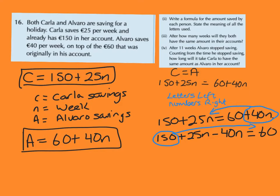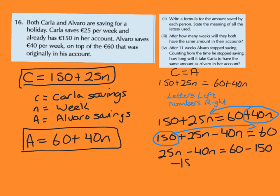So doing that, I have 25n minus 40n equals 60 minus 150. Even though there's no sign in front of this 150, we know that's going to be positive, otherwise there would have been a negative sign there. Now we have like terms together, so I can add or subtract them: 25n minus 40n gives me minus 15n, and 60 minus 150 gives me minus 90. Can anyone pop into chat and tell me what I do to find n by itself?